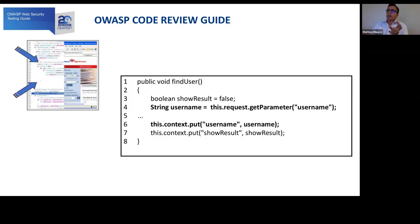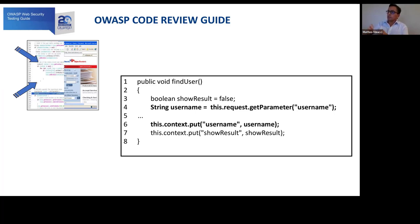The OWASP Code Review Guide is another interesting project that focuses on the source code, performing this kind of analysis during development. Here you can see the same vulnerability from the source code point of view — at line five, something is missing: the username is not validated and there is no encoding strategy, so the vulnerability is present.